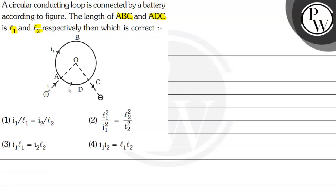Then out of the four options we need to choose the correct option. Here the key concept involved is that for a uniform conducting wire, the resistance is directly proportional to length.